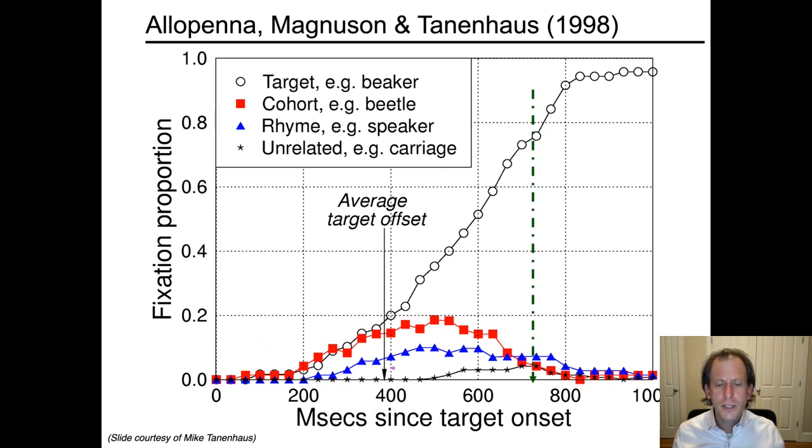But there's another interesting thing to note, which is even quite far in, there's a period where looks to the rhyme competitor actually persist after looks to the cohort competitor are dropping. That is, it seems like the last part of the word 'eaker' and the similarity of the target and the rhyme also plays a role, even though in principle you might imagine that the beginning of the word has already ruled out the rhyme. So the target initial dissimilarity to the rhyme does not completely rule out the rhyme as evidenced by the fact that there really are some lingering looks to the speaker. And that also is maybe open to theoretical interpretation. For example, maybe people don't have a perfect representation of the sounds that they heard earlier on. They have sort of a decent but imperfect representation. And so their uncertainty about 'did I really hear buh or spuh' actually plays a role here. So that's the visual world paradigm.